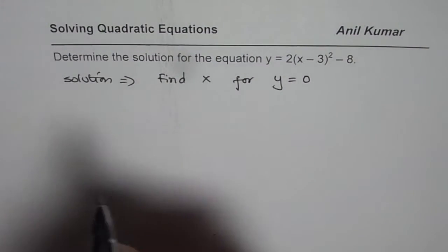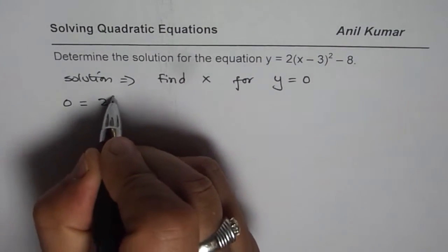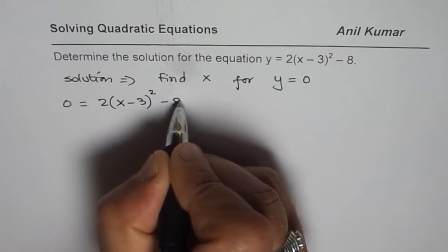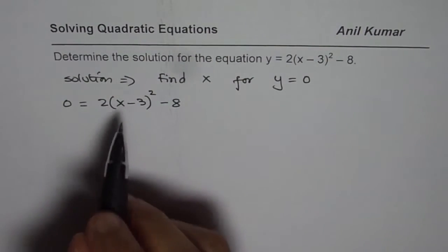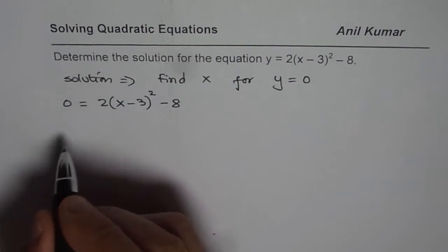So let us substitute 0 for y and solve the equation. So we have 0 equals 2 times x minus 3 whole square minus 8. Now, let me rewrite this equation. We have 0 on the right side.